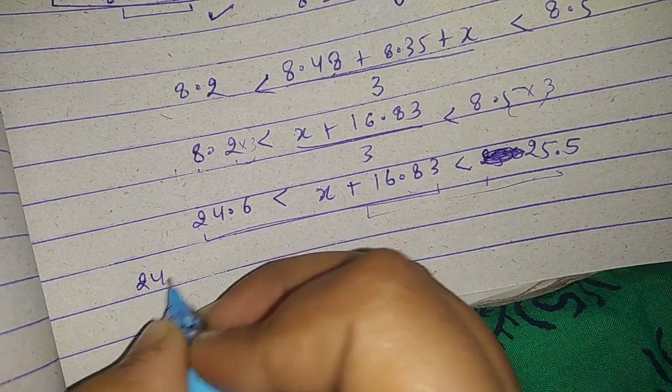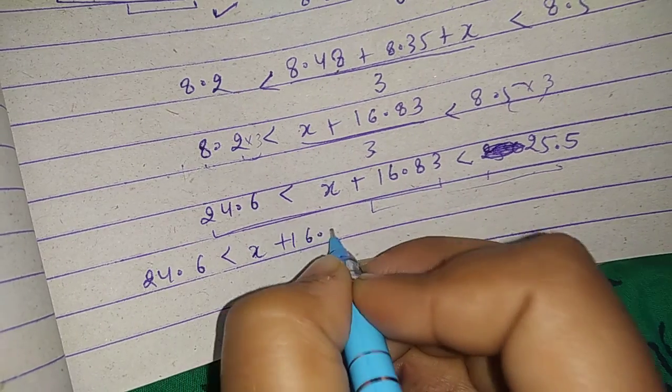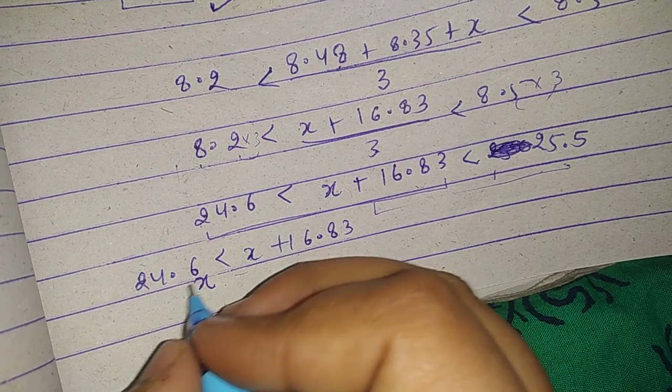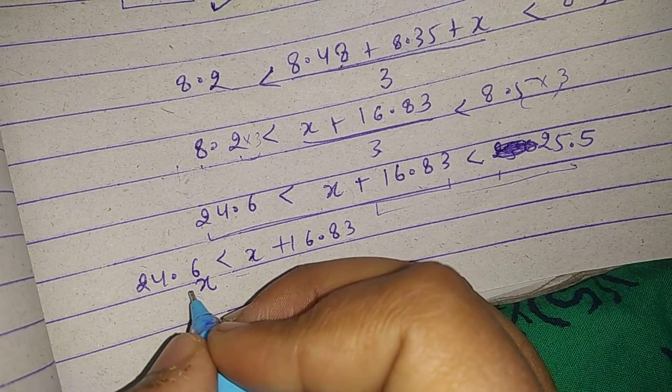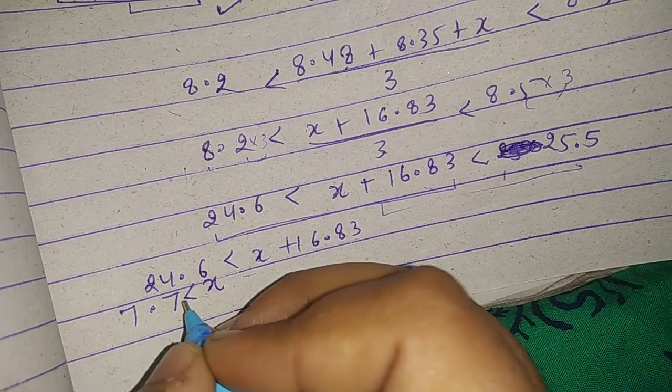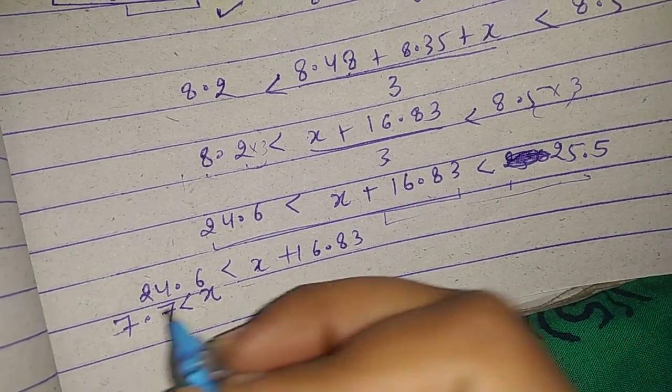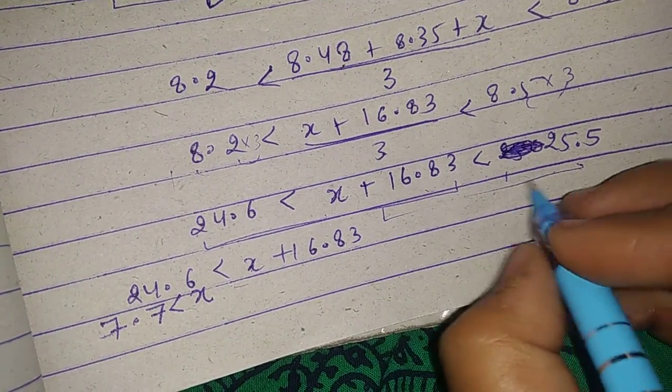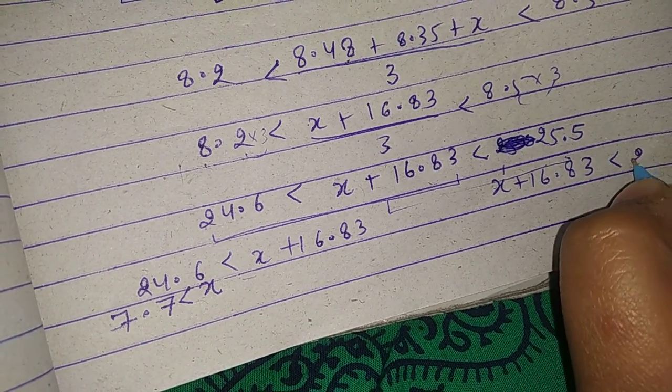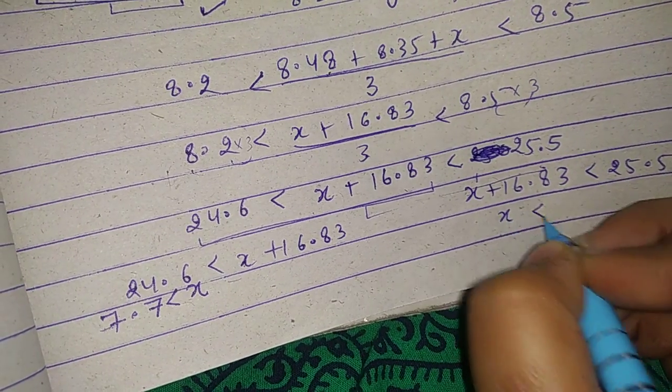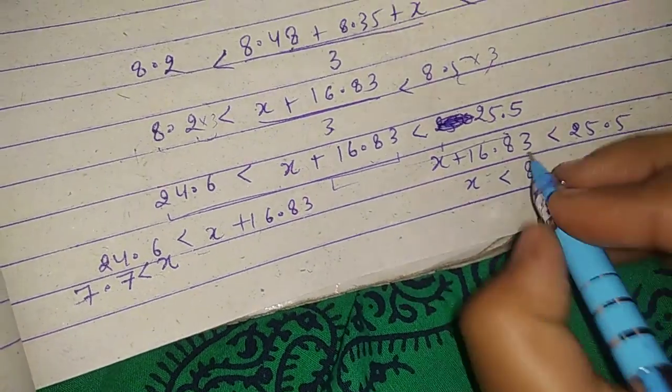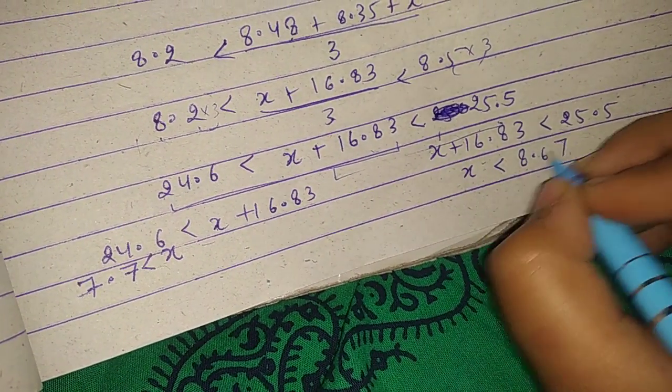24.6 is less than x plus 16.83, is less than 25.5. So x is 7.77 or 0.43 is 8.3. And x, how much value? 25 minus 16 is somewhere 8.67.